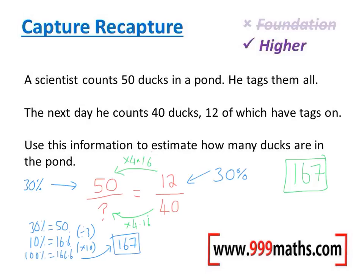Either way, it's just about thinking about the proportion that were captured on one day, the proportion on the other day, and trying to make these equal to work out the missing number.